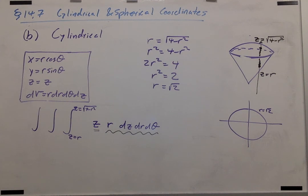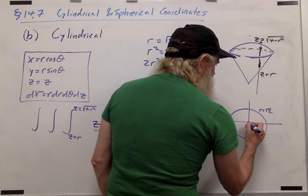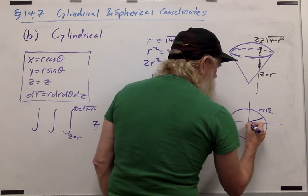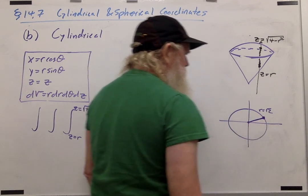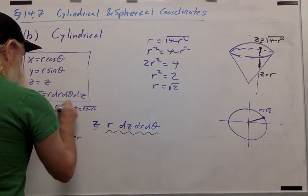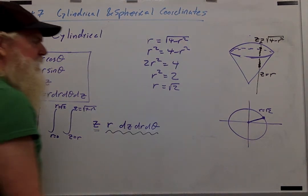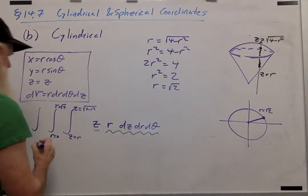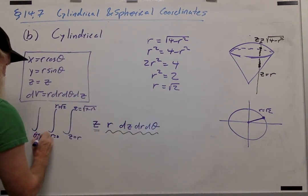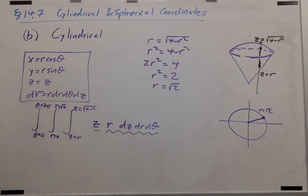So that circle where the sphere and the cone intersect has a radius of square root of 2. So that tells us how we set up the bounds for r, because r is going to have to go from the origin out to that circle. So we go from r equals 0 to r equals the square root of 2. And then finally, theta is going to have to go all the way around. So theta goes from 0 to 2 pi.